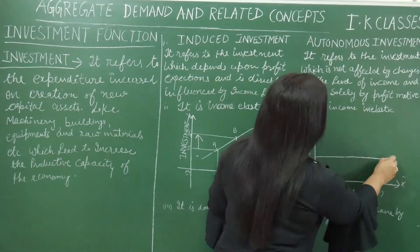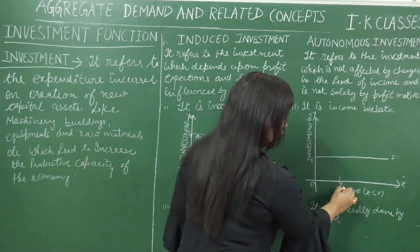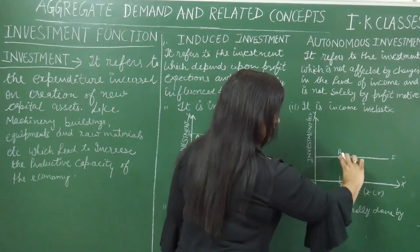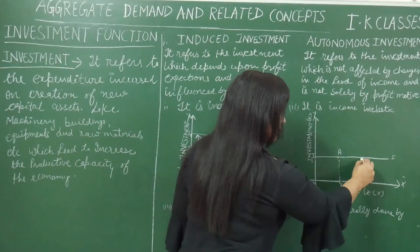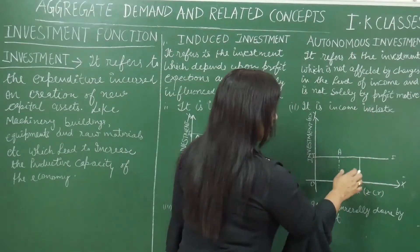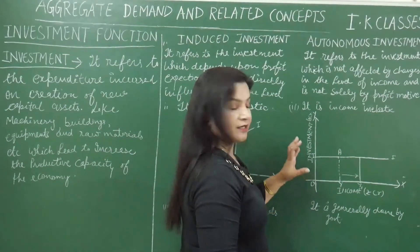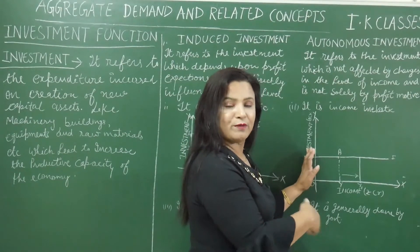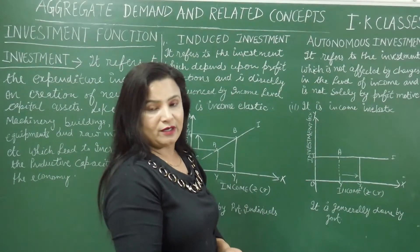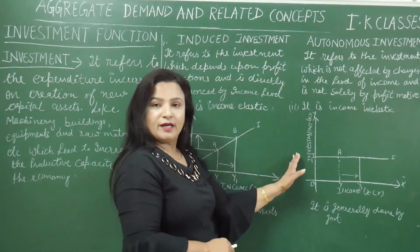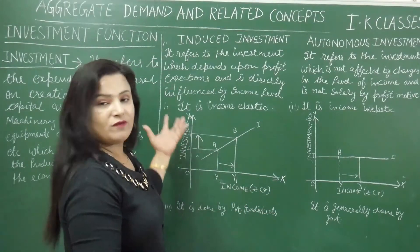Being income inelastic means that whether income is very low, zero, or very high, the investment remains the same — whatever is necessary. If we look at the graph, the autonomous investment curve is a horizontal straight line, parallel to the x-axis. At different levels of income — OY, OY1 — investment remains the same, say 40 crores. Whether income is 100, 200, 300, or 400, investment stays at 40 crores. So it remains the same at all levels of income and is generally done by the government.